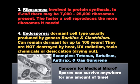Endospores are one of those inclusion bodies we talked about at the beginning of the unit. Endospores are a dormant cell type usually produced by the genera Bacillus and Clostridium. The interesting thing about endospores is they can remain dormant for up to 100 years. They're not destroyed by heat, UV radiation, toxic chemicals, or even desiccation — which is drying out.